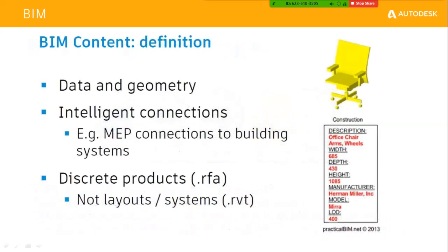BIM content provides the necessary data and geometry for a particular phase. It also contains intelligent connections — for MEP components like chillers, AHUs, and network components, it will also contain the MEP connections. When providing the BIM model to a client, it must contain the necessary data and size, as well as where the ducting connections come from, and the data should be able to import into the respective software.